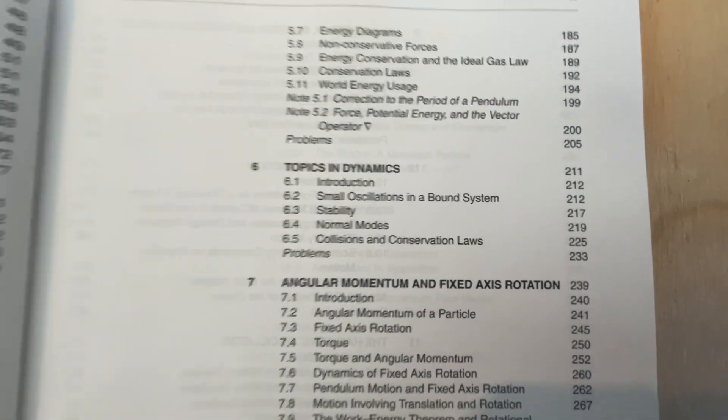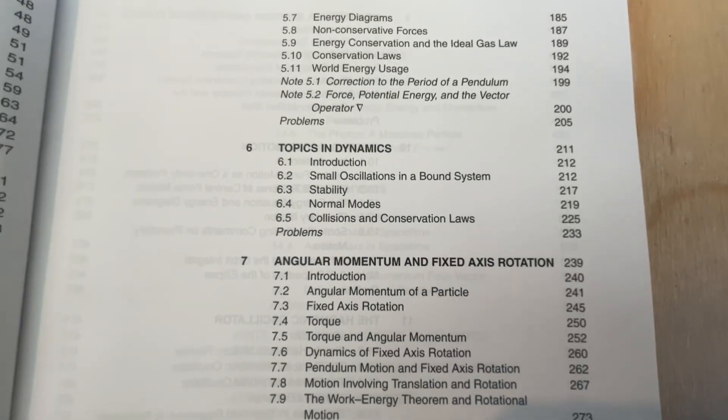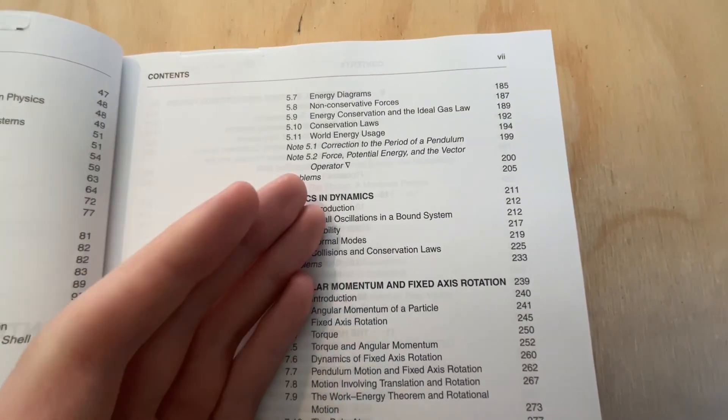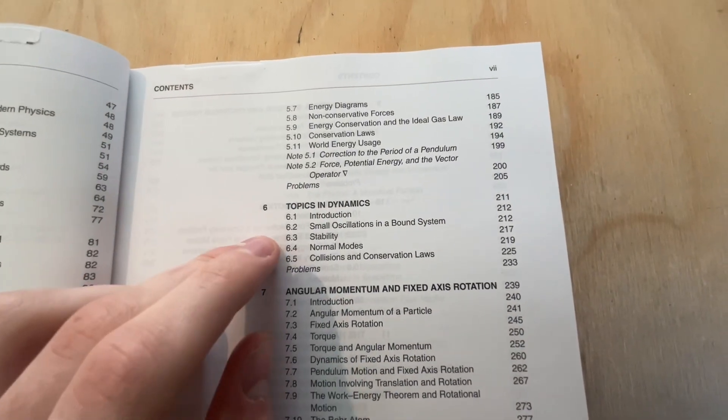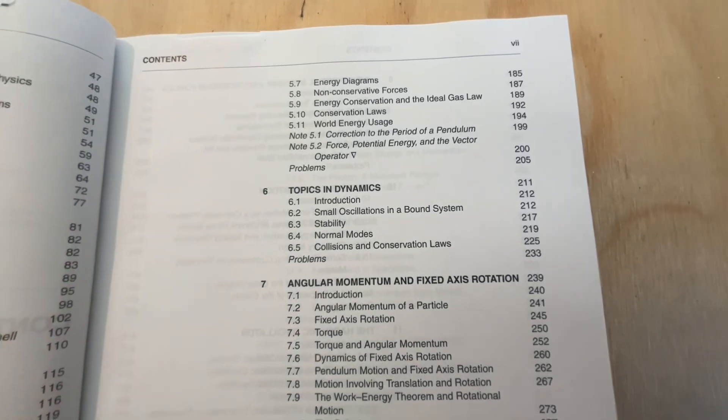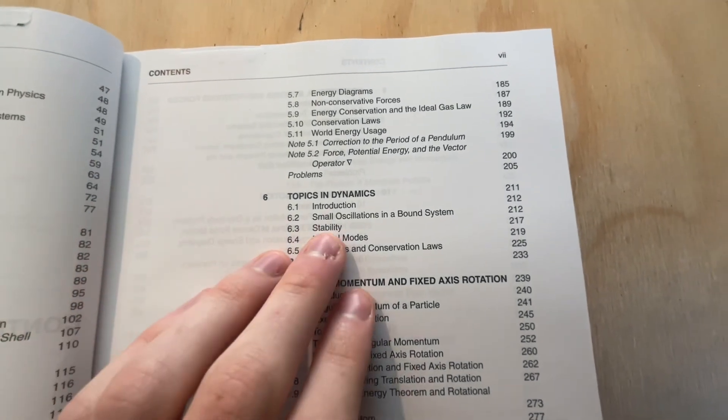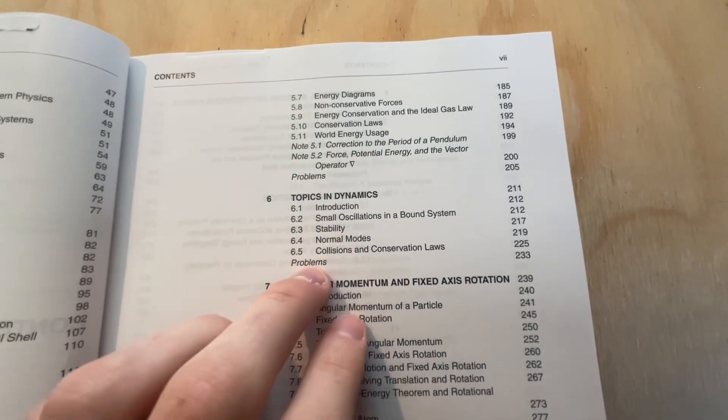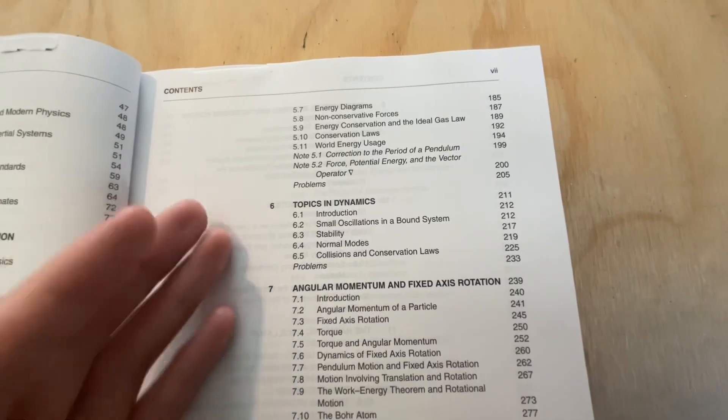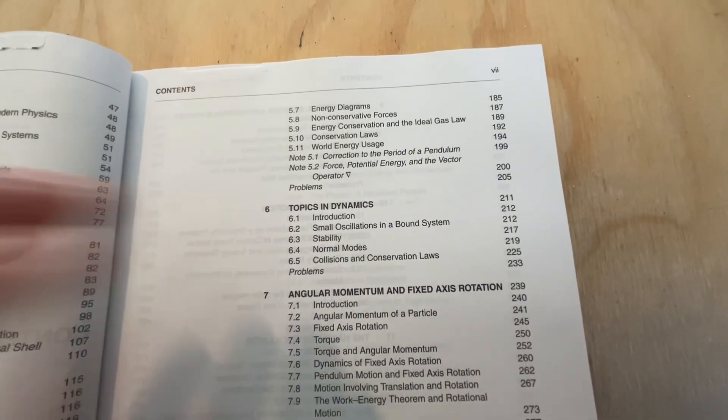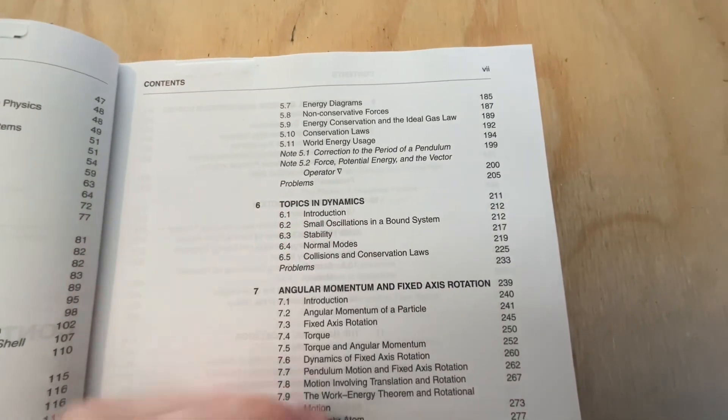Topics in dynamics. So this is some more stuff about small oscillations and stability and normal modes. This stuff is definitely not introduction material. You'll typically see this in a book like Taylor. Typically the stability and normal modes, that stuff you'll always see in books like Taylor. Really interesting that it's covering it here.